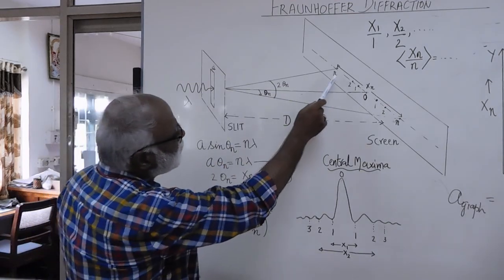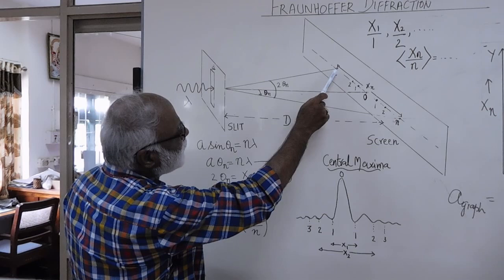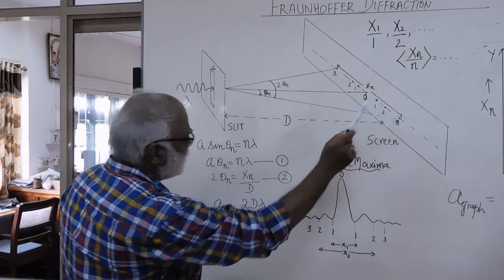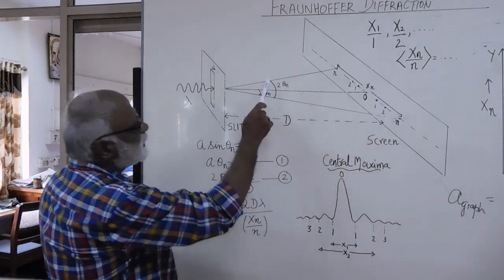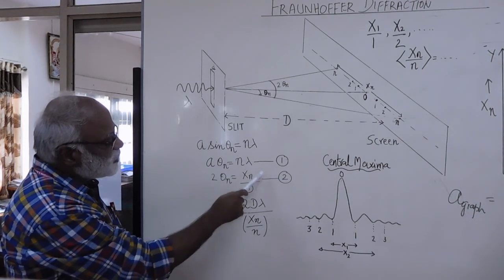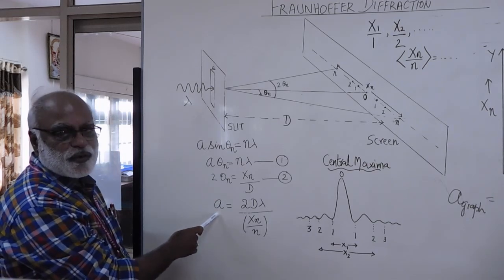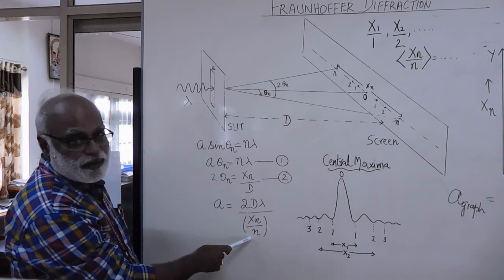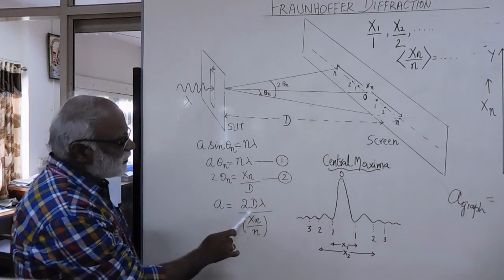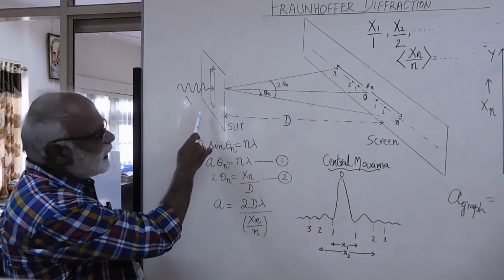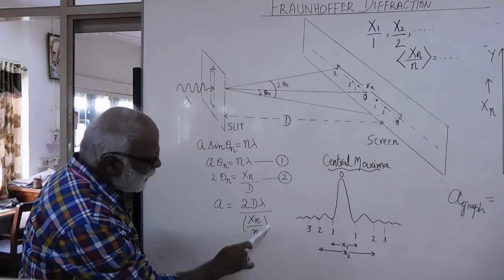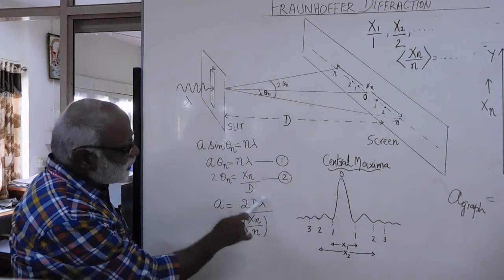From the geometry of this diagram, if we measure the distance of the nth minima from one side of the central maxima to the nth minima on the other side, that distance xn is related to the distance d and angle 2θₙ by the formula: 2θₙ = xn/d. Combining these two equations, we derive the expression for the slit width: a = 2dλ / (xn/n). In the experimental setup, d can be measured, lambda is known from the manufacturer, and experimentally we determine the ratio xn/n.